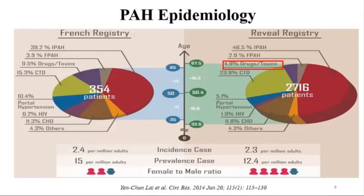Looking at epidemiology, the median age is about 50. These are from two registries—the French one and the REVEAL Registry, which is the main U.S. registry. It highlights incidence, prevalence, and female-to-male ratio. It is a rare disease occurring more in females. You have a breakdown of different causes including drug and toxin, and you always have to take a thorough history. The French Registry had more HIV cases compared to the U.S.-based registry.